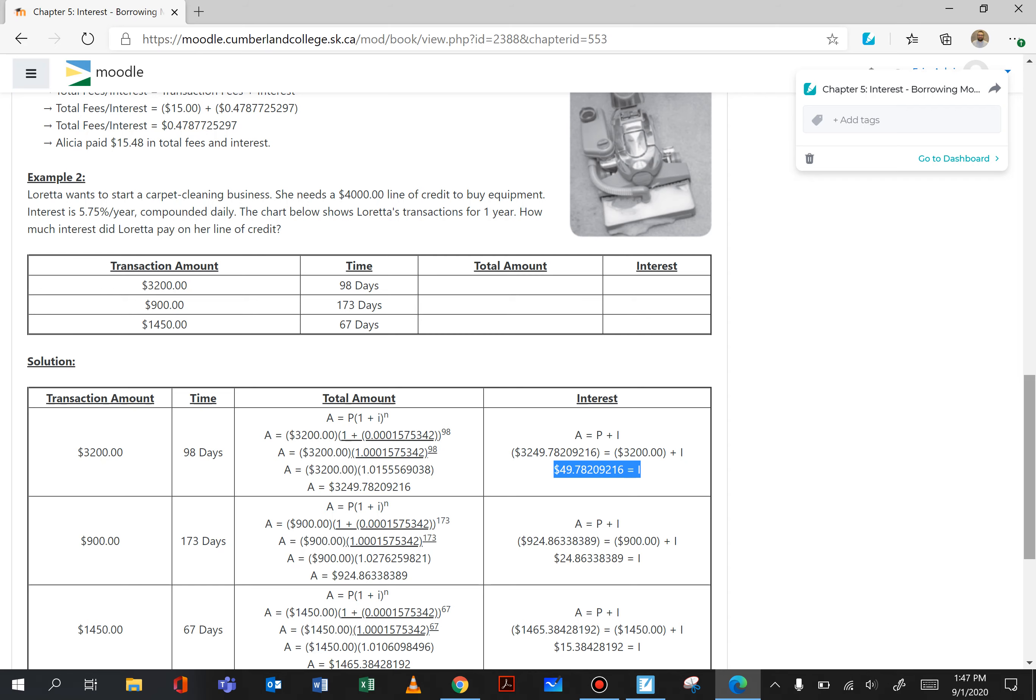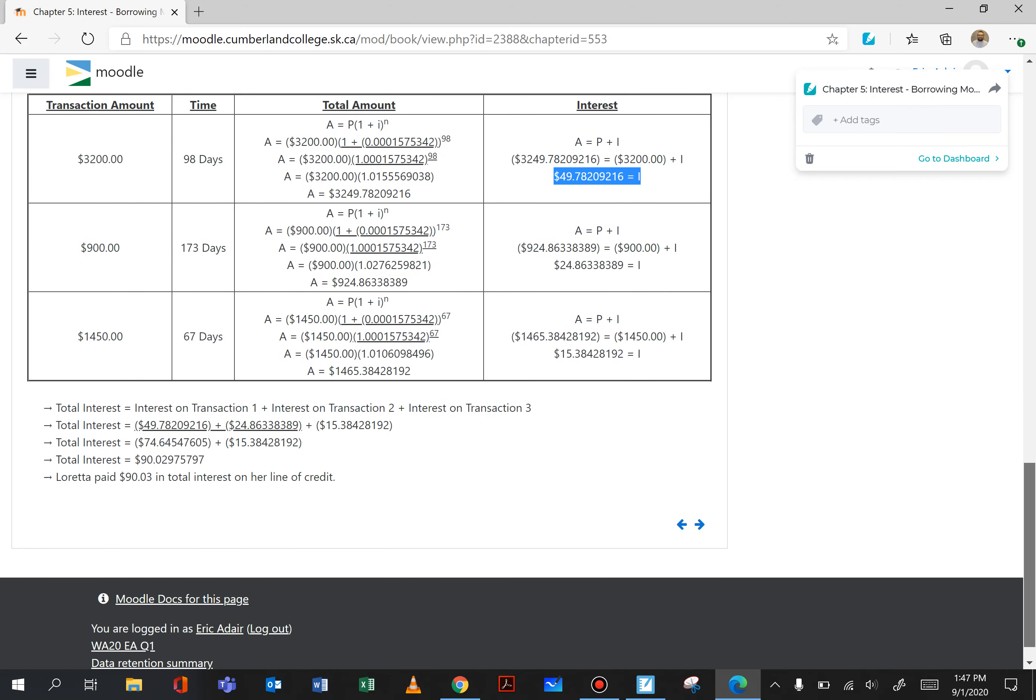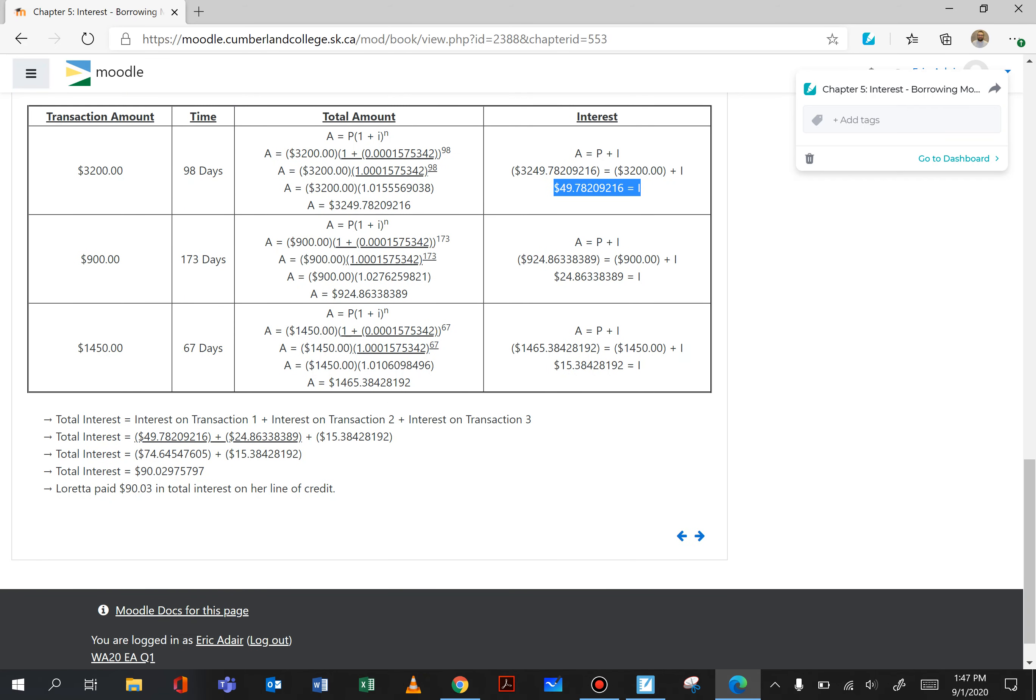So if we want to know the total interest that she had to pay for all of the overdraft transactions, then we just need to total up the interest of each of the individual transactions. So adding them all up we get a total of $90.03 in total interest on our line of credit.